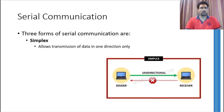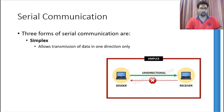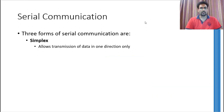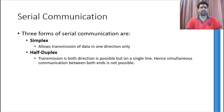Serial communication has three different forms. The simplest one is called simplex. In this form, only one device can communicate with the other, whereas the reverse is not possible. An example of this is a simple thermometer used to measure room temperature. The temperature sensor can tell you the temperature by generating a signal, but you cannot communicate with the temperature sensor or tell it to do anything.